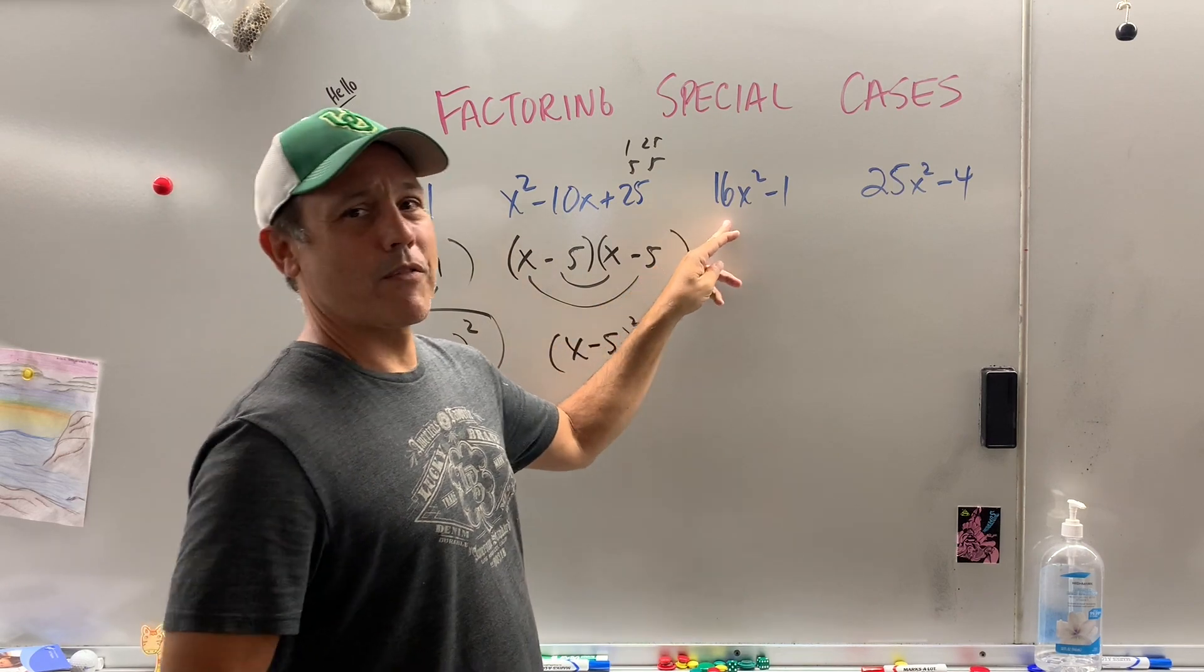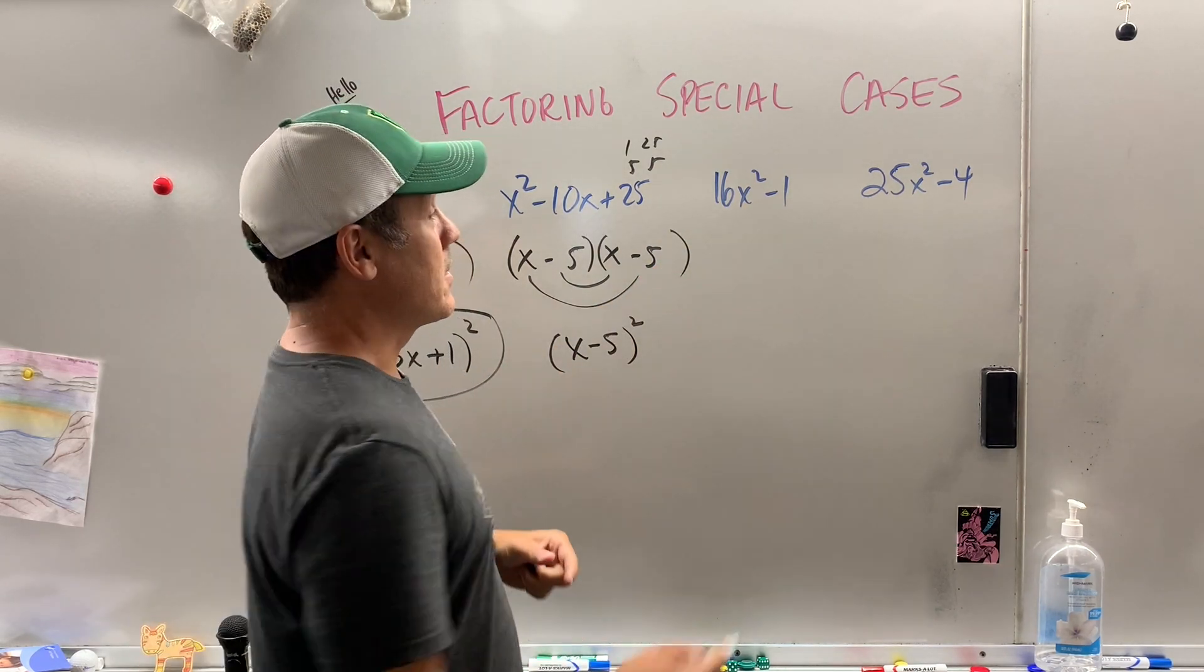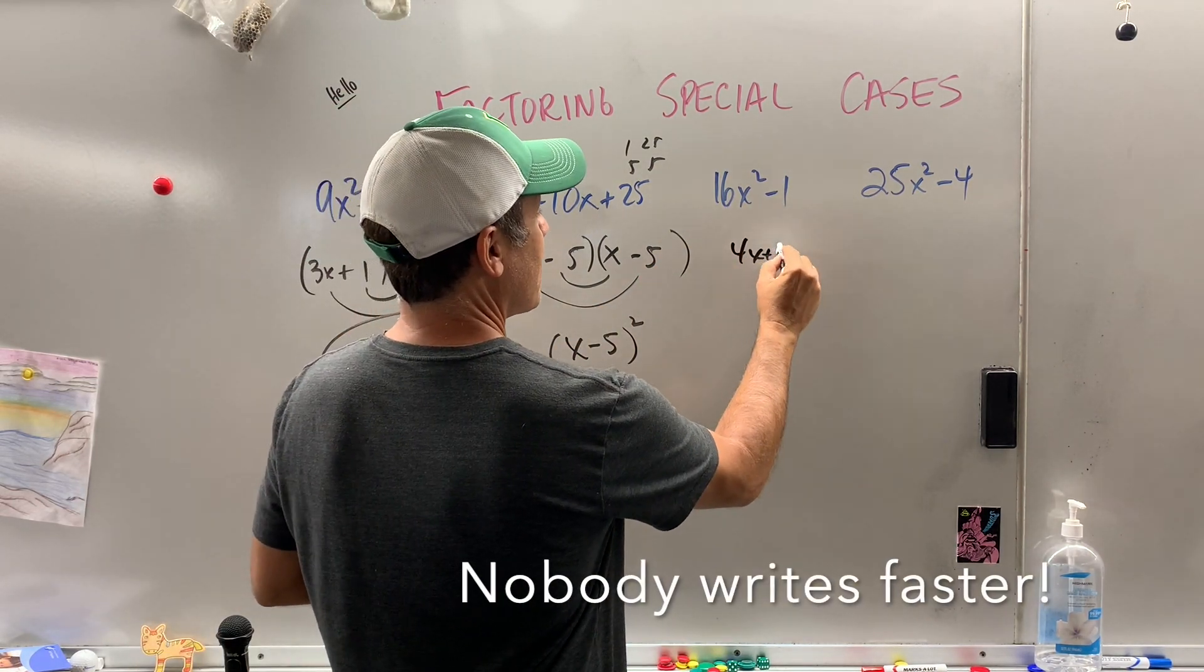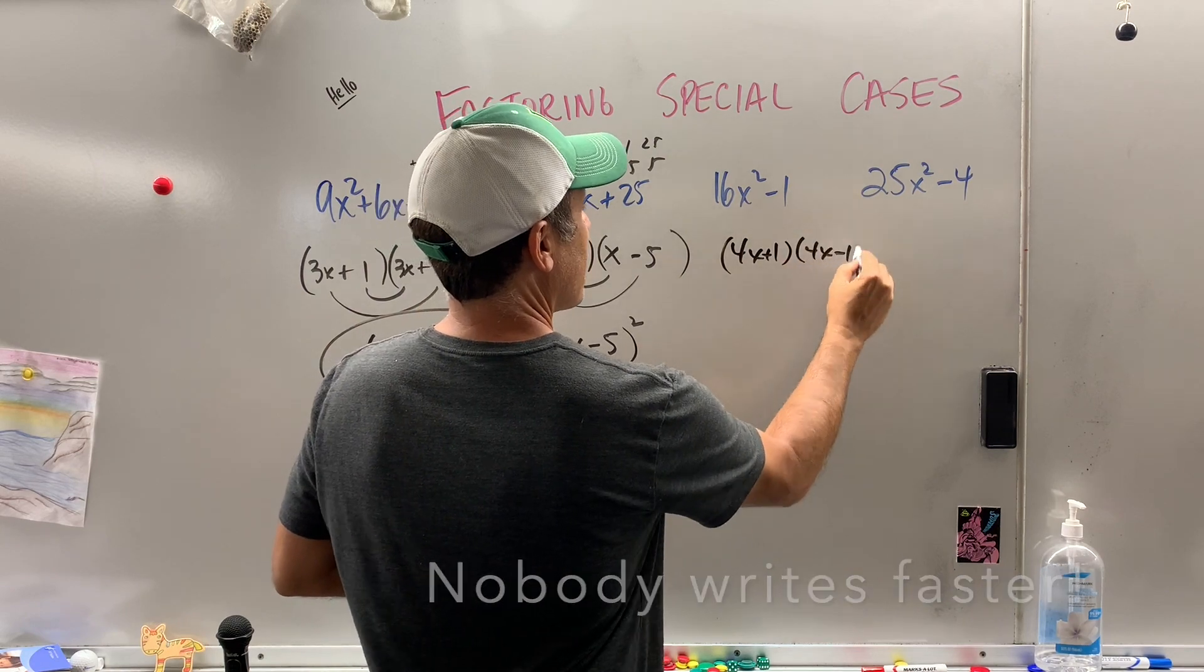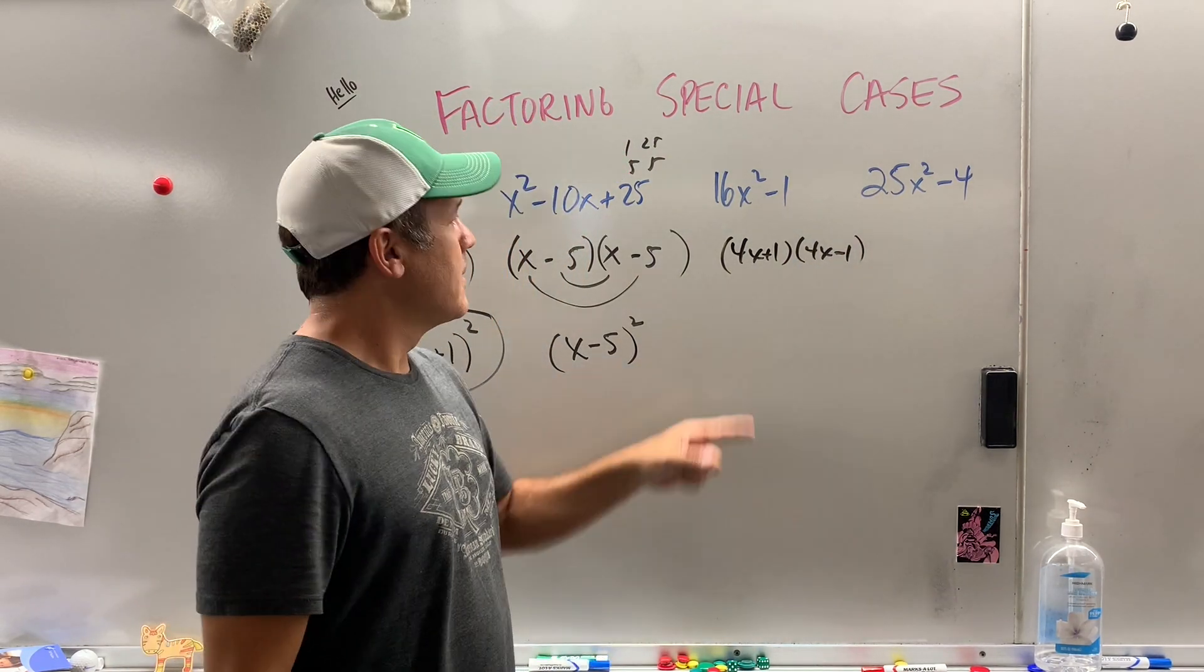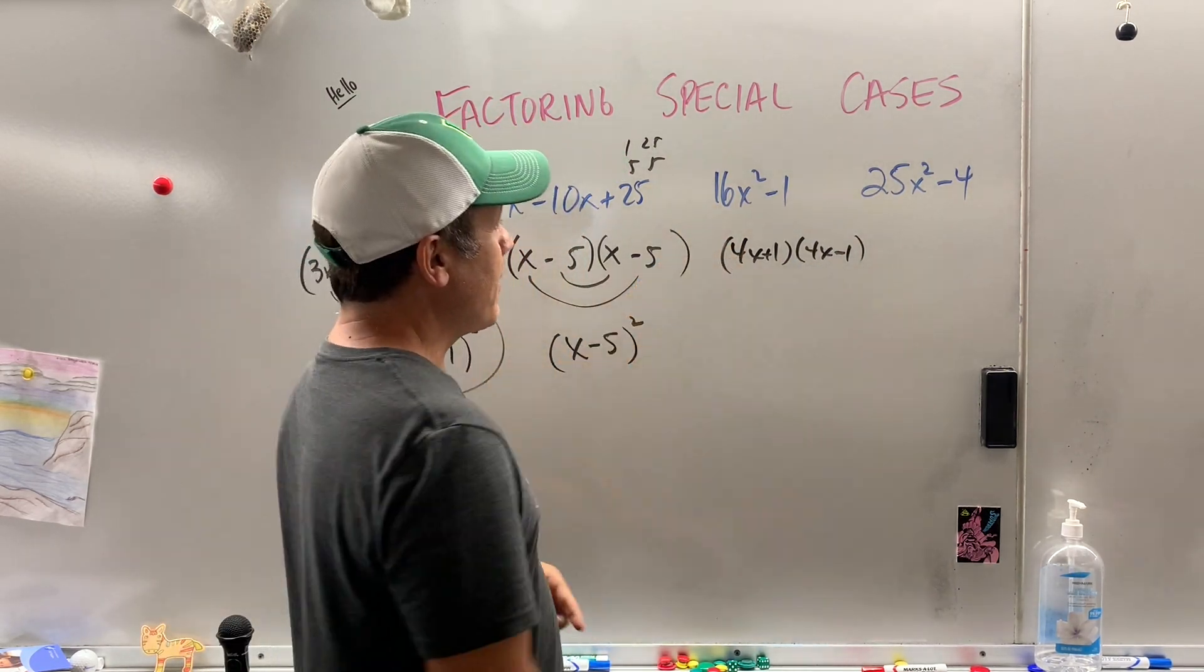These ones, as fast as you can write. Ready? Watch this. I know the answer is 4x plus 1, 4x minus 1. Pretty fast. Now, how did I know that? Well, check this out.